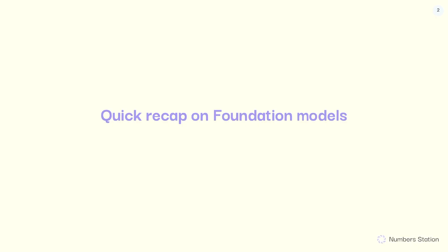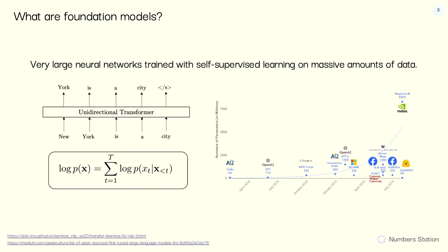So that was a bit depressing but also very exciting, and that's when we decided to start this company. Most people here know about generative AI and foundation models, but I want to do a quick recap. At a high level, large language models are very large neural networks trained on massive amounts of unlabeled data — text, images, videos on the internet — using a technique called self-supervised learning. A big group of models are large autoregressive language models, where the idea is to train the model to predict the next word in a sentence, and essentially any sentence on the internet becomes a training example.